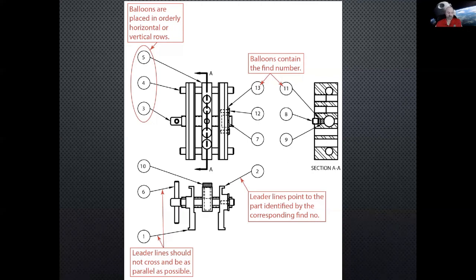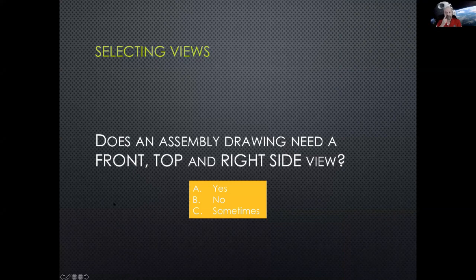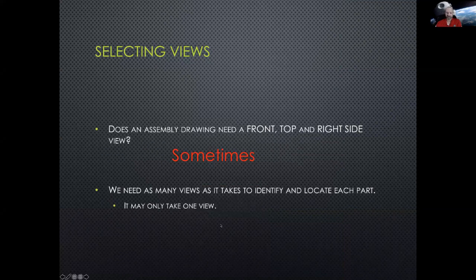Regarding selecting views: does an assembly drawing always need a front, top, and right side view? The answer is sometimes. Occasionally you will need all the views, but most of the time you may only need one or two views. You need as many views as it takes to identify and locate each part. If a part is hiding behind something, you'll need another view so you can identify it.